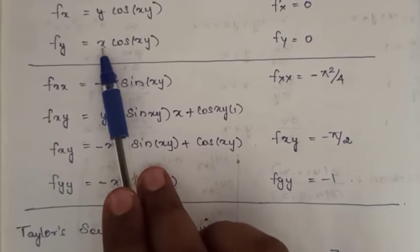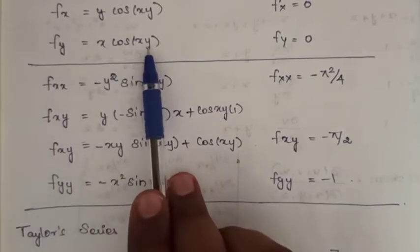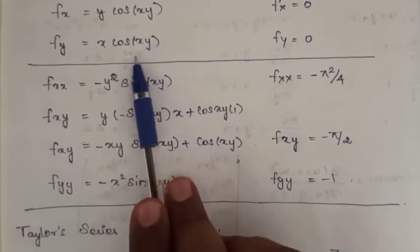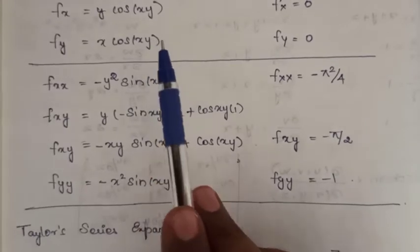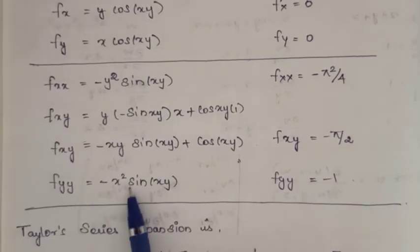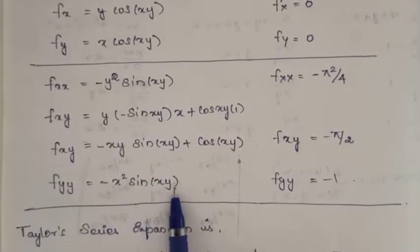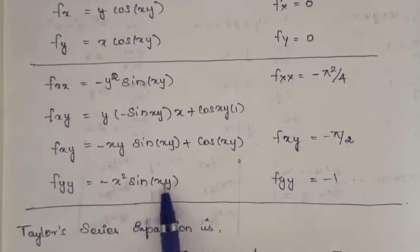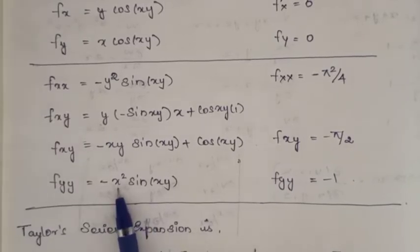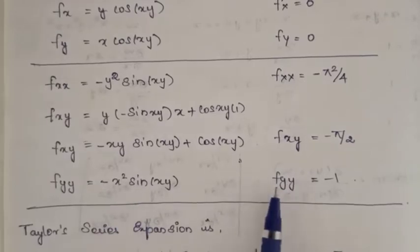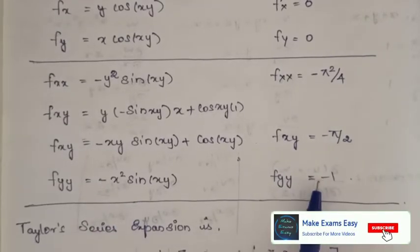Differentiating fy = x·cos(xy) with respect to y: x is treated as constant, differentiating cos(xy) gives minus sin(xy), then differentiating xy with respect to y gives x. So fyy = minus x²·sin(xy). Substituting x = 1, y = π/2: fyy(a, b) = minus 1.